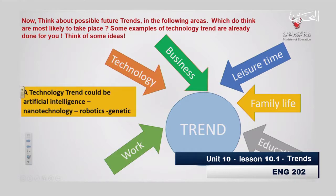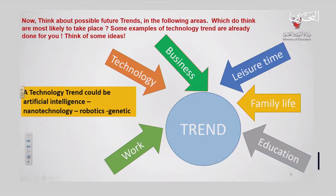Now, as you see here, we have many fields that possible trends can be seen in. For example, we have technology, business, leisure time, family, life, education, and work. Can you come up with some ideas related to these fields and trends? For example, the technology trends could be artificial intelligence, nanotechnology, and robotics. How about the rest of the fields — business, leisure time, family, education, and work? What are the other future possible trends that can be found in these fields?